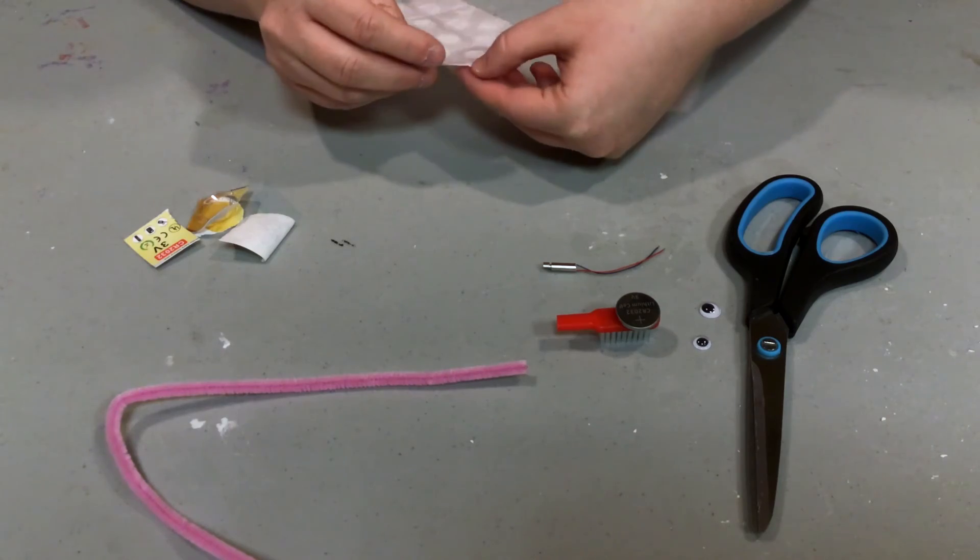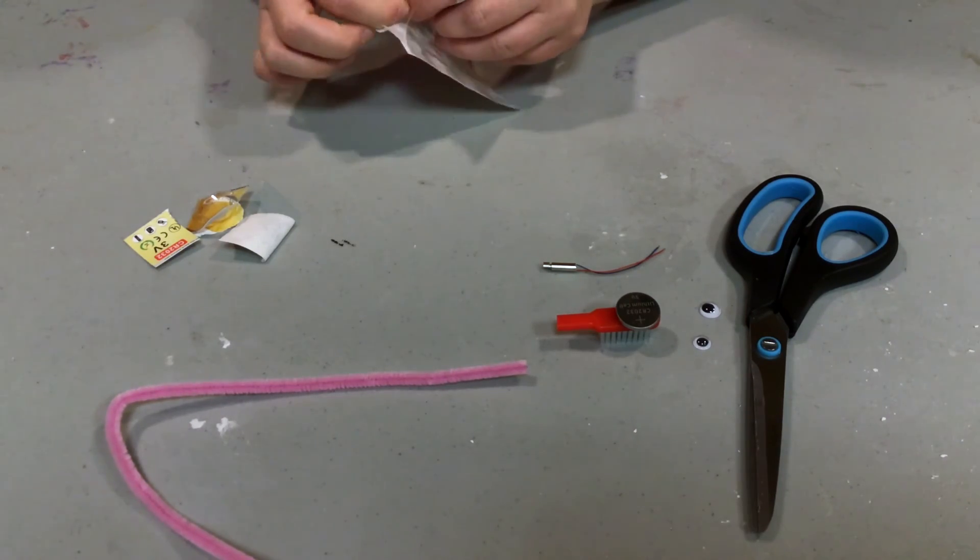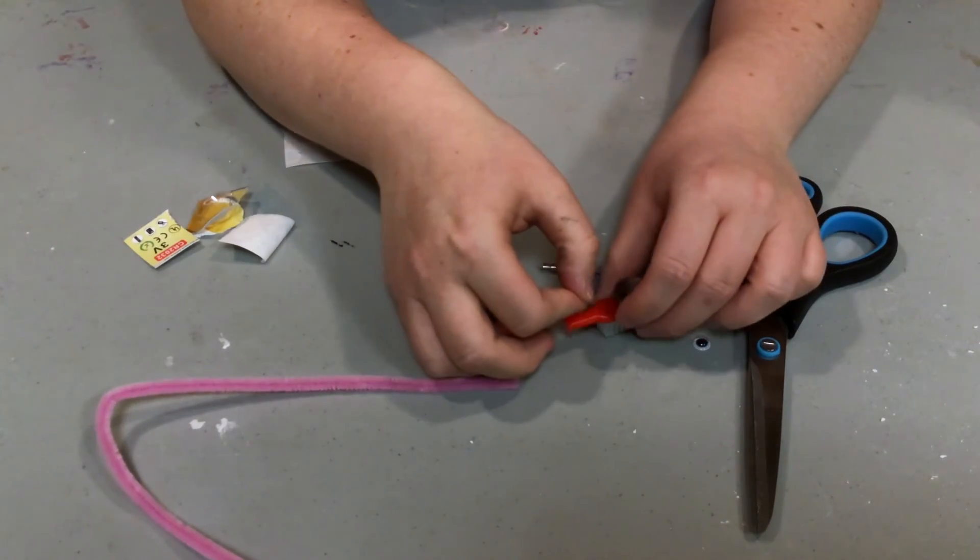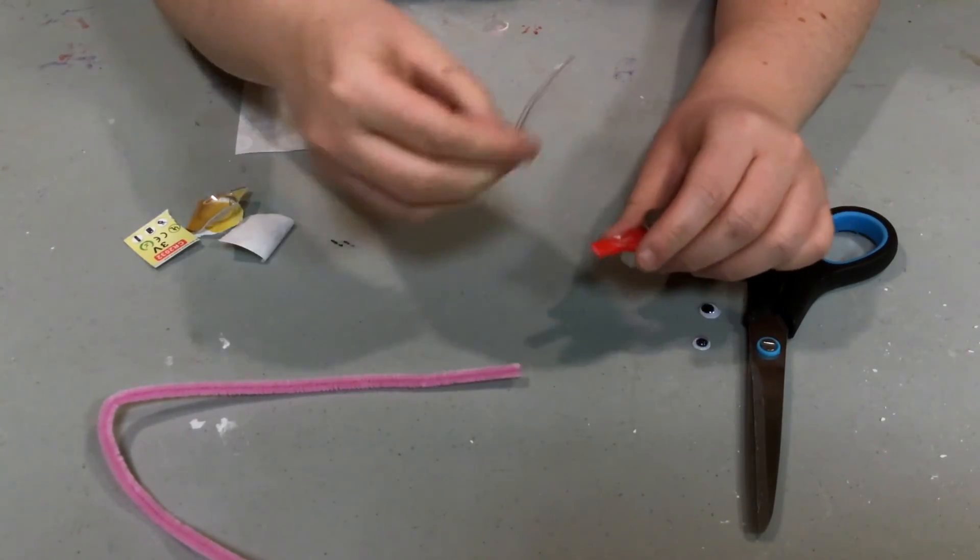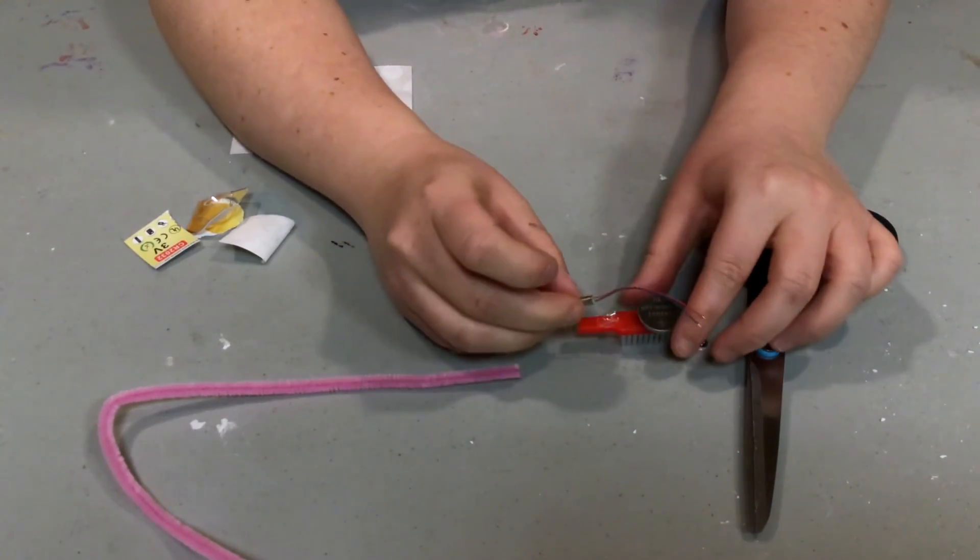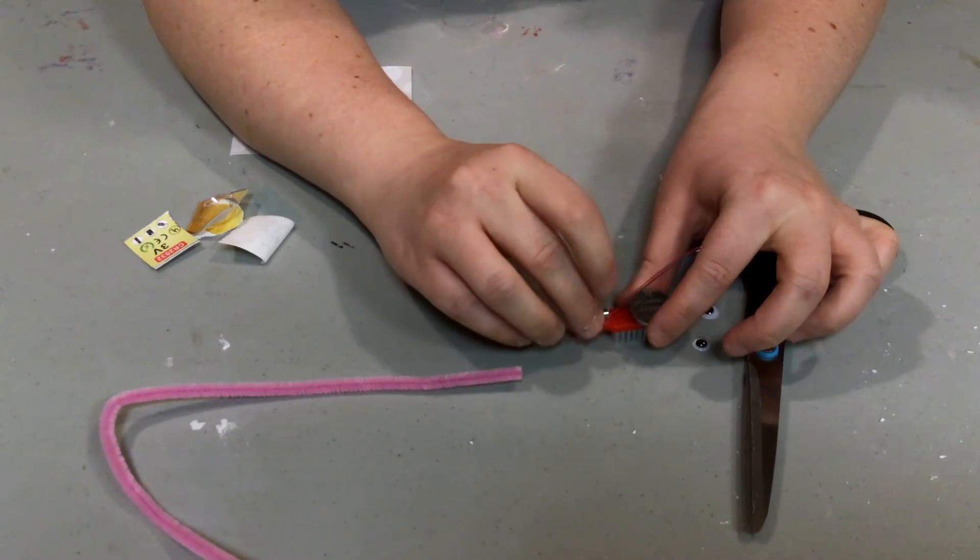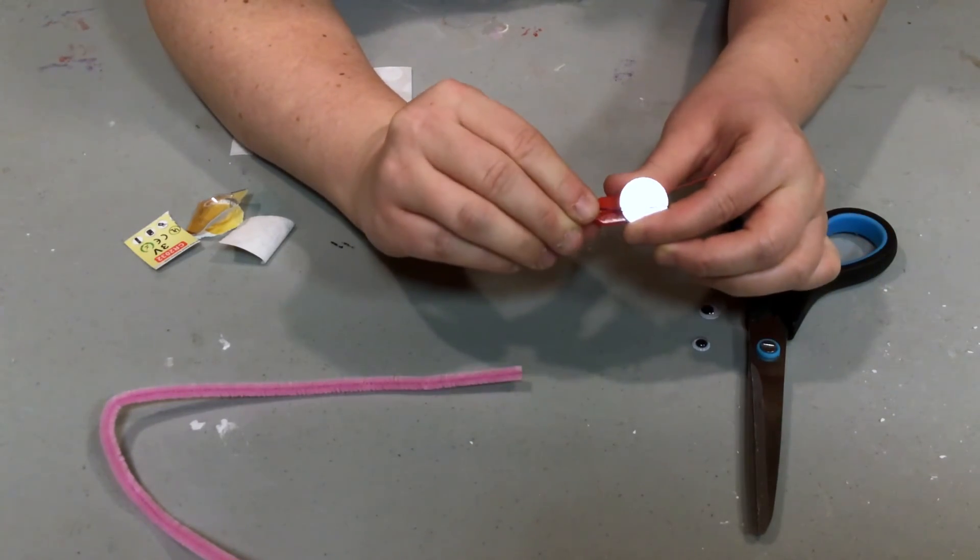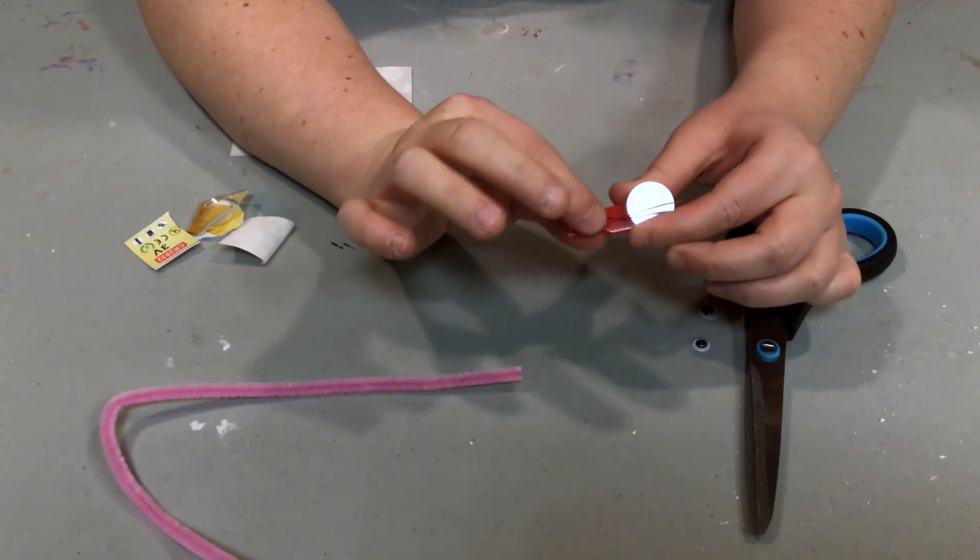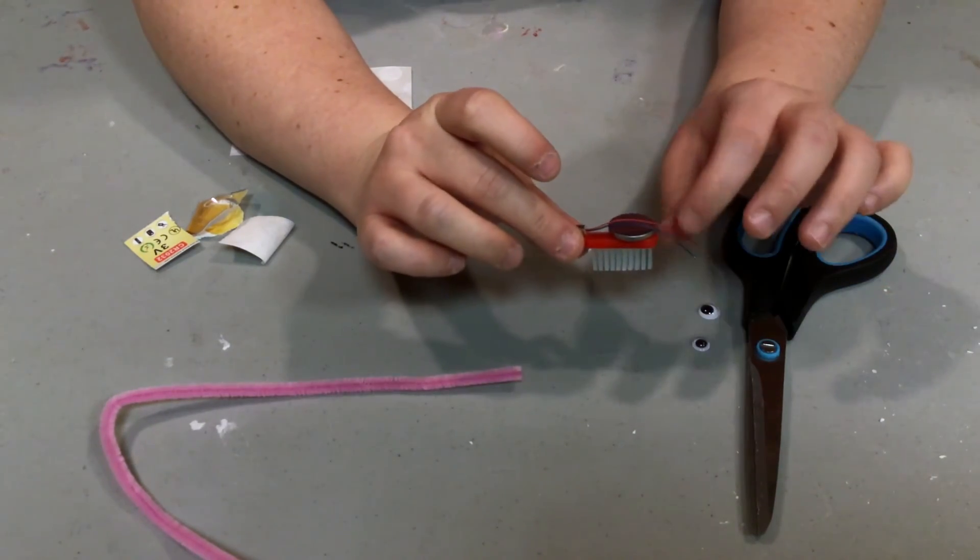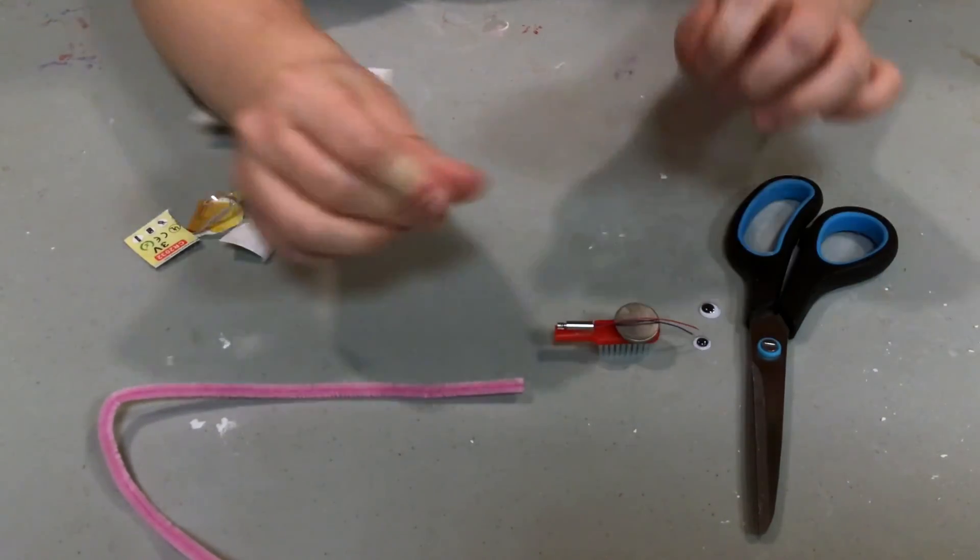Then, you're going to take another glue dot to attach the vibrating motor toward the back of your toothbrush head. And you're going to want to make sure that the wires are facing the front. So, the motor is attached to the back of the toothbrush, but with the wires facing the front. And we're just going to leave those alone for just a second.